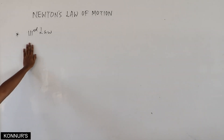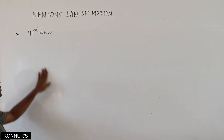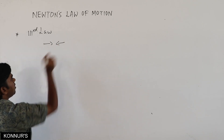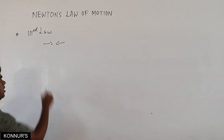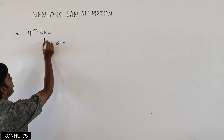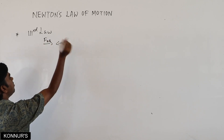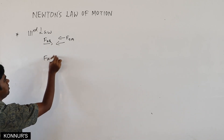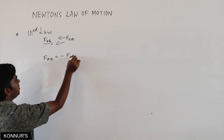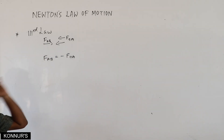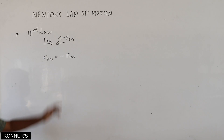Newton's third law is very important for finding action-reaction pairs. It states: for every action there is an equal and opposite reaction. If force F_AB acts on one body, that body will also act force F_BA on the other, and F_AB equals minus F_BA. But this law has four important conditions to verify.